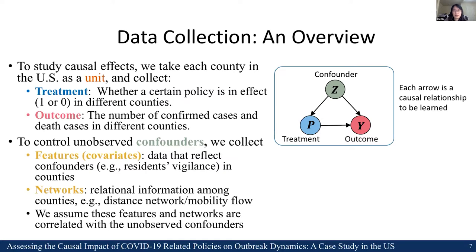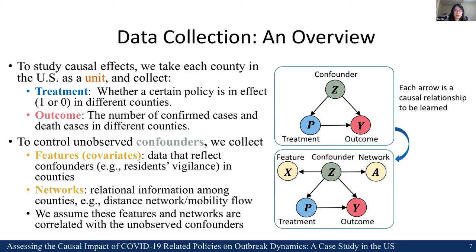In this work, to study causal effects, we take each county in the US as a unit and collect treatment as whether a specific policy is in effect or not — a binary value. We take the outcome as two different variables, including the number of confirmed cases and the number of death cases in different counties. To control for confounders, even if they might be unobserved, we can still use some proxy variables to capture them. We collect features for each county which reflect confounders, and we also collect relational information among different counties, like the distance network. We assume these features and networks are correlated with the unobserved confounders so we can utilize them.